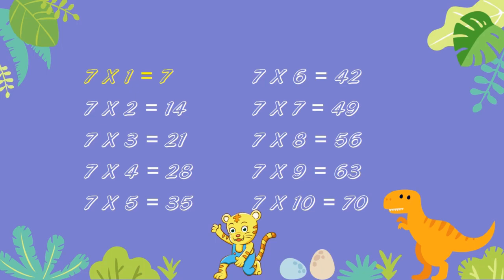7 ones are 7. 7 twos are 14. 7 threes are 21. 7 fours are 28. 7 fives are 35. 7 sixes are 42. 7 sevens are 49. 7 eights are 56. 7 nines are 63. 7 tens are 70.